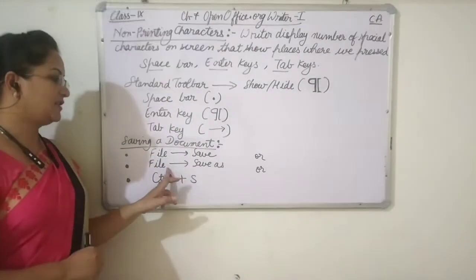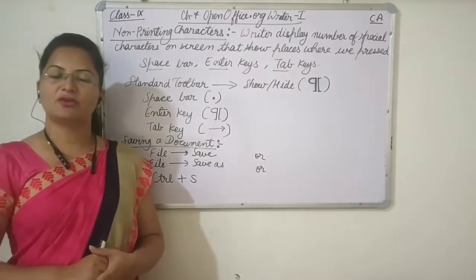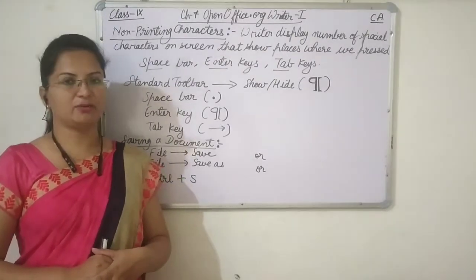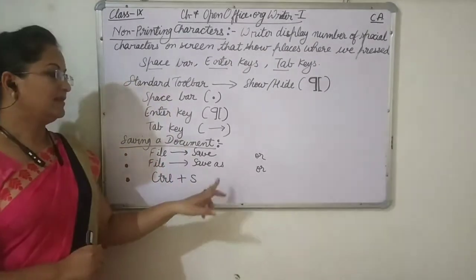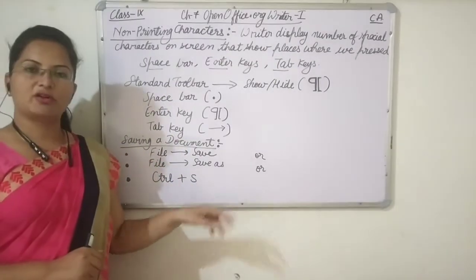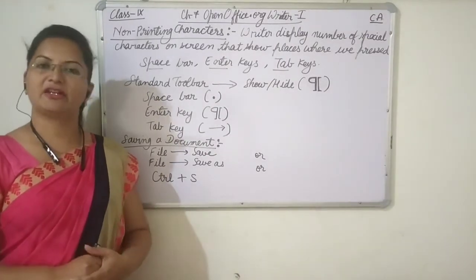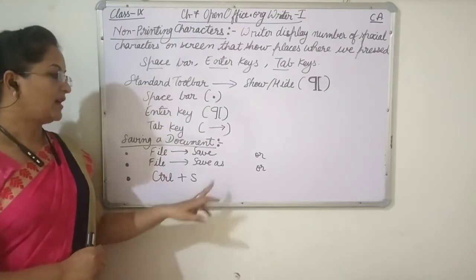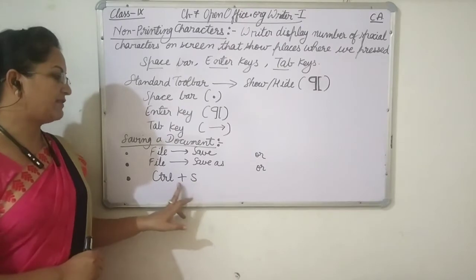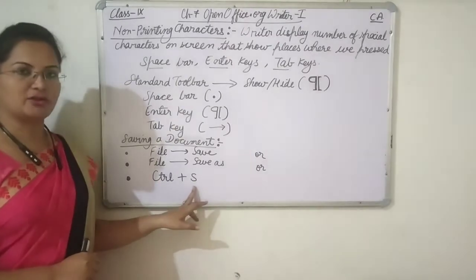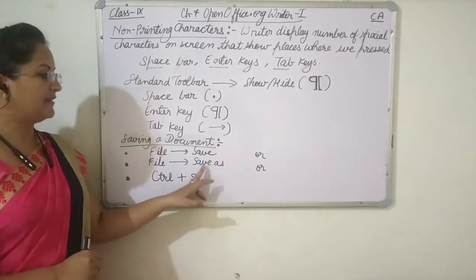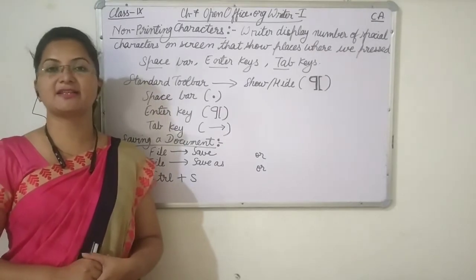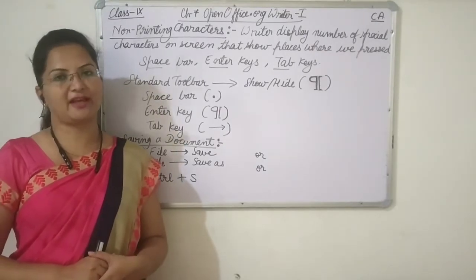We can give the name of the file and then click the Save button. We also have another option called Save As. For that, we have to click on Save As in the File menu and a dialog box will appear where we can give the name to the file and click Save. We also have shortcut keys — Ctrl+S for Save, and Ctrl+Shift+S for Save As.